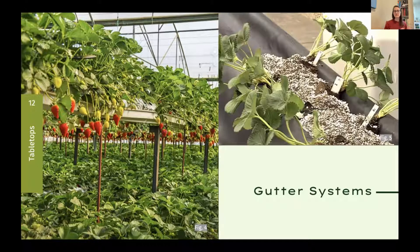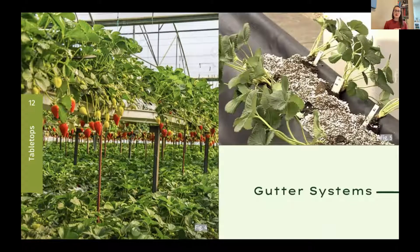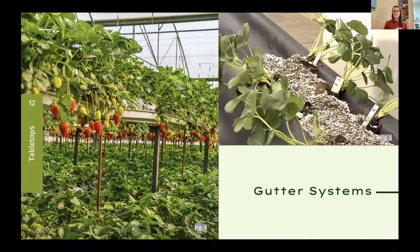The system I'm describing is a gutter system — one of the most common configurations for tabletops. On the left you can see greenhouse production in the Netherlands with gutters and grow bags on the greenhouse floor. On the right is a photo of plants being planted in the greenhouse at the University of Arizona, which has also done extensive tabletop strawberry growing work.